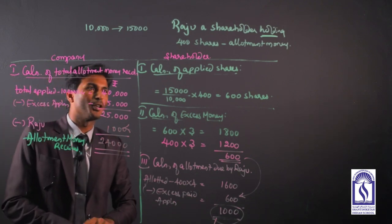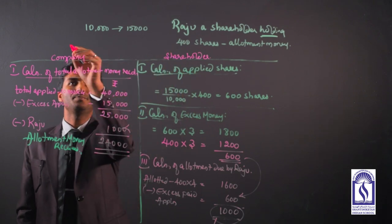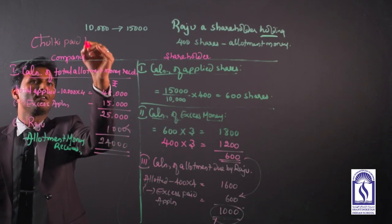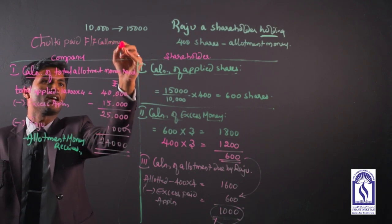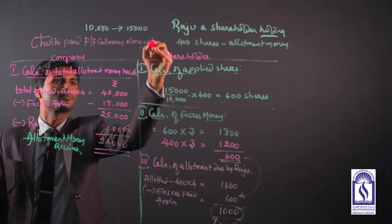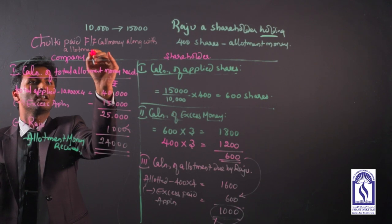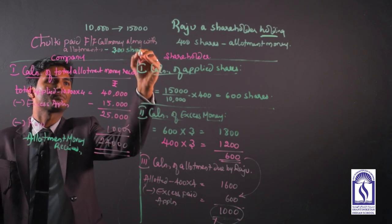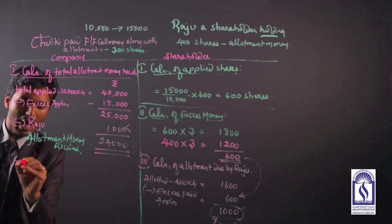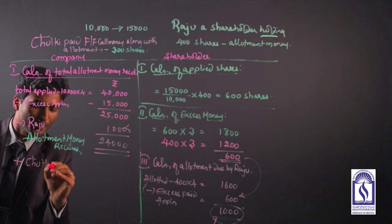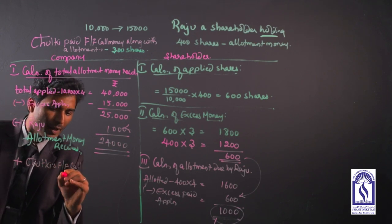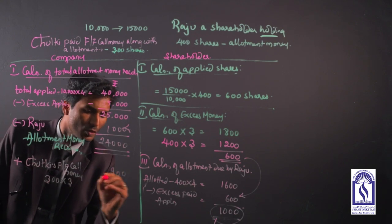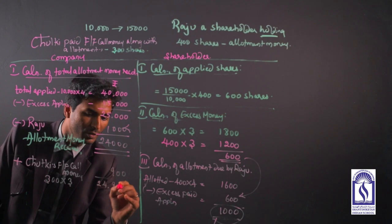Let me just evaluate a part of question in this. Suppose another shareholder Chutki paid first and final call money along with allotment. Now this situation will put you in calls in advance situation. So Chutki shares, let us take 300 shares. Along with this money that we have received, add Chutki's excess money. Chutki's first and final call money, so it will be 300 shares holding into 3 rupees is the first and final call. So total money that we have received is 24,900 during the time of allotment.